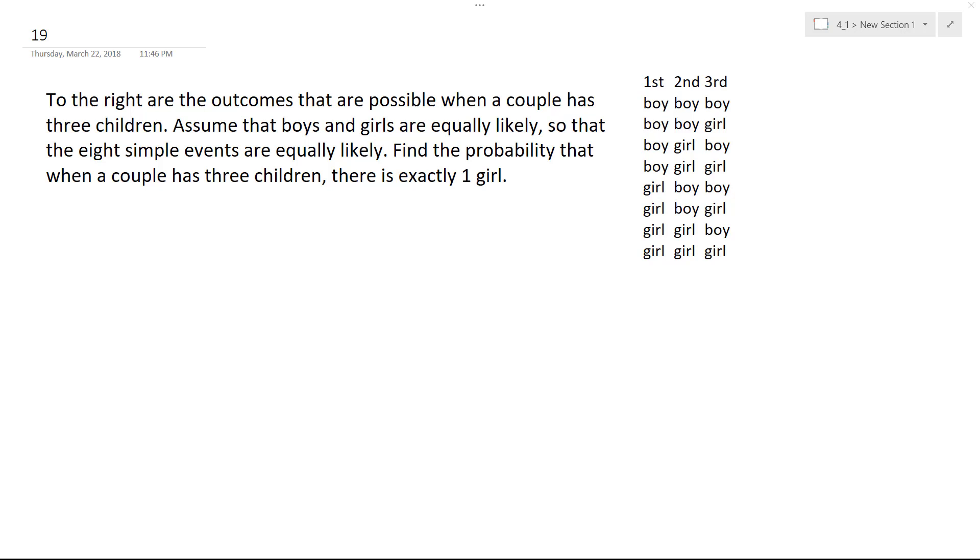All right, so what we have here is the possible outcomes for a couple who have three children. Assuming that boys and girls are equally likely, so of the eight simple events, find the probability that the three children will have exactly one girl.